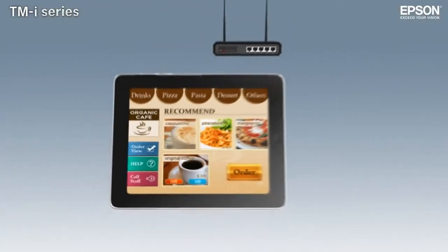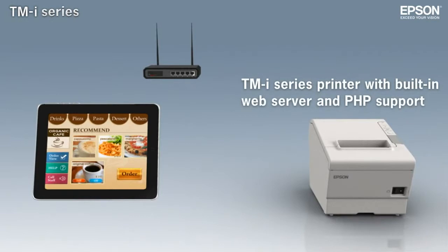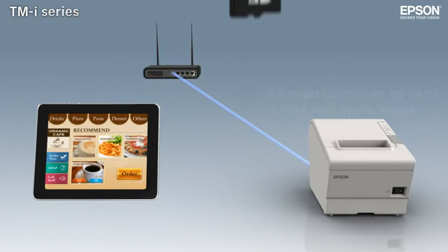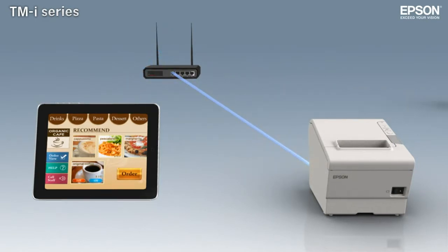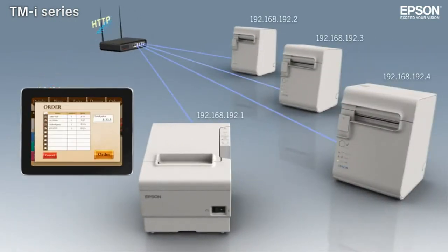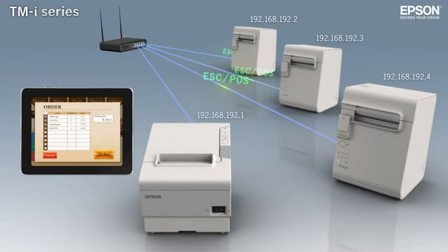With their built-in web server and PHP support, TMI series printers are a low-cost way to add web application printing power to small networks. A single TMI printer can be set up as a hub and used to control conventional POS printers on the same network.